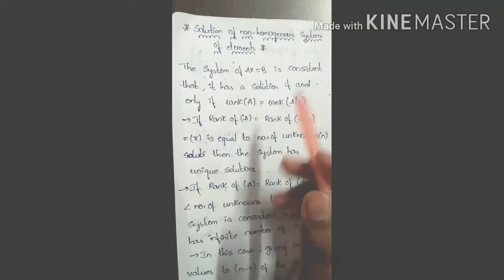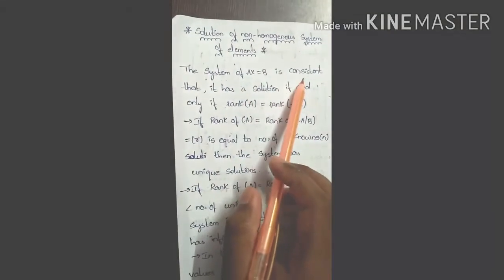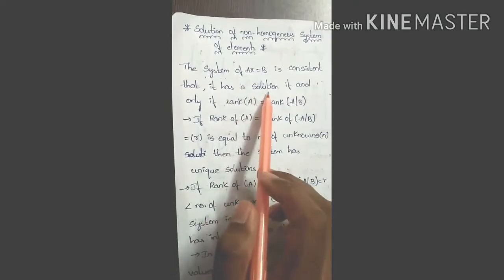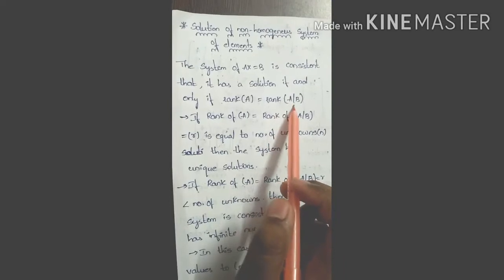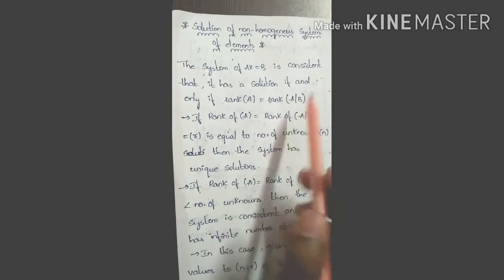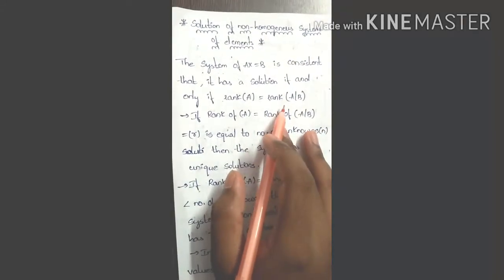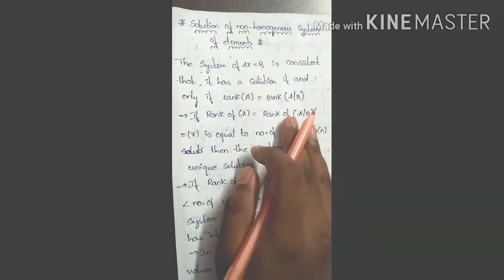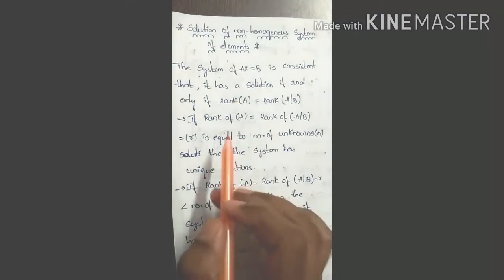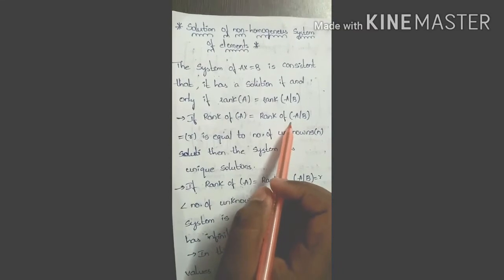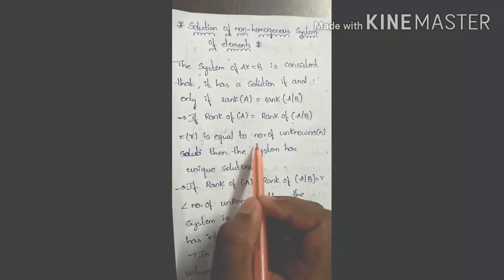The system Ax = B is consistent if and only if the rank of A equals the rank of the augmented matrix [A|B]. If rank of A does not equal rank of the augmented matrix, the system is inconsistent. So the key condition is: rank of A must equal rank of augmented matrix [A|B].